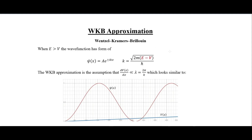In this video I'm going to start discussing the WKB approximation. This is an approximation method used when we have a slowly varying potential — if our potential is varying more slowly than the wavelength of our wave function. In this video I'll be talking about how we do this for the classically allowed region, which is when our energy is greater than the potential.